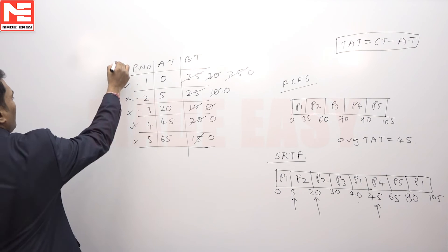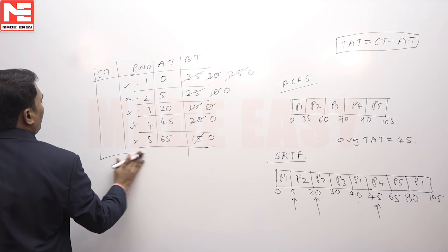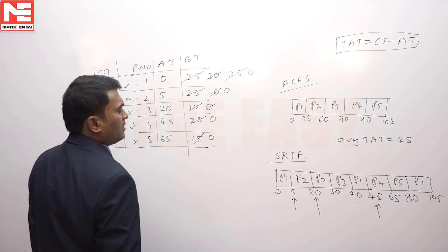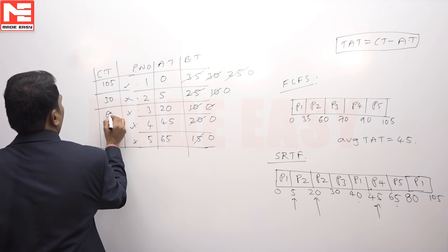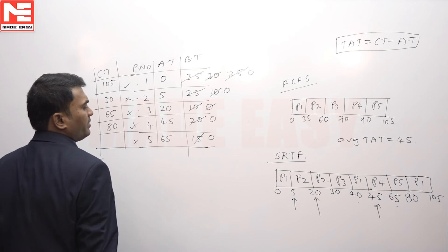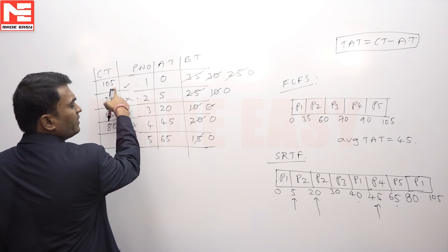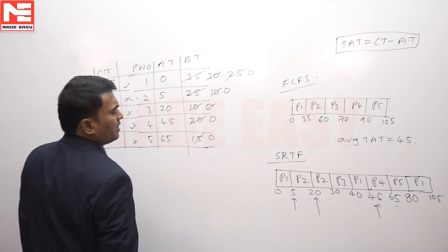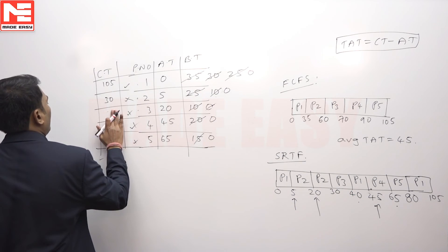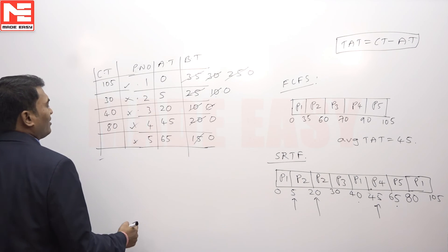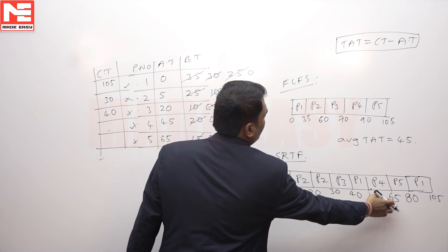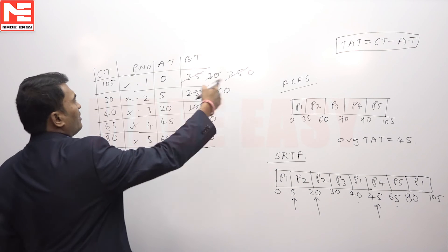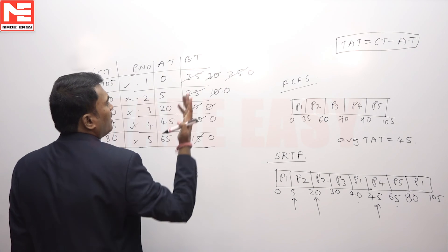Now find the completion times for SRTF. P1 completion time = 105. P2 completion time = 30. P3 completion time = 40. P4 completion time = 65. P5 completion time = 80. Now apply the same formula — turnaround time = completion time minus arrival time.